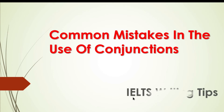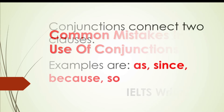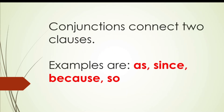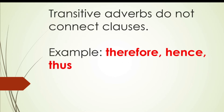Hi everybody. In this video, you will learn the correct use of some commonly confused conjunctions. A conjunction is a word used to connect two clauses. Keep in mind that you can use only one conjunction to connect two clauses. Sometimes we use transitive adverbs instead of conjunctions. They do not connect the clauses but they also ensure the flow of ideas.